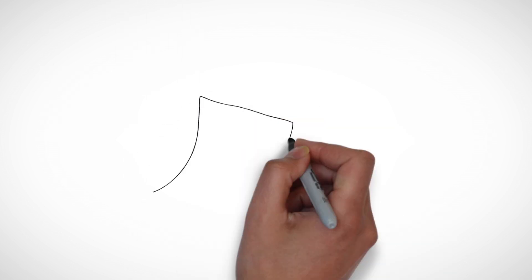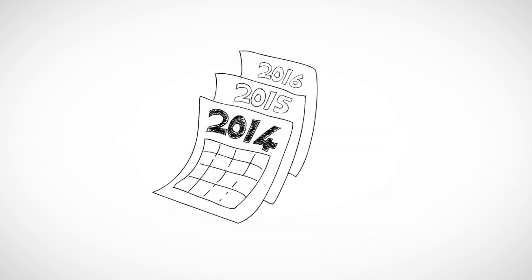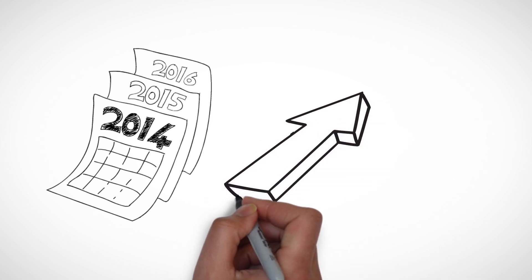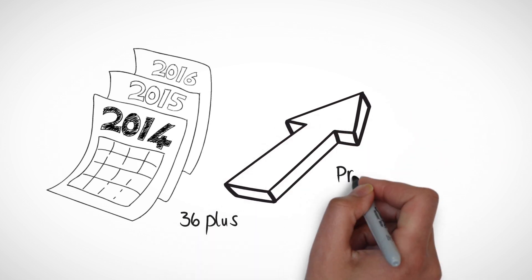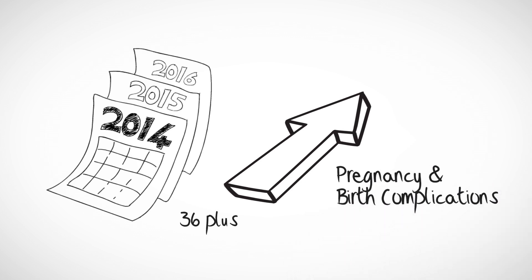Your age not only increases the length of time it will take you to fall pregnant, but once you're there, you'll have an increased risk of miscarriage and birth defects. You're also more likely to experience complications during pregnancy and at childbirth.